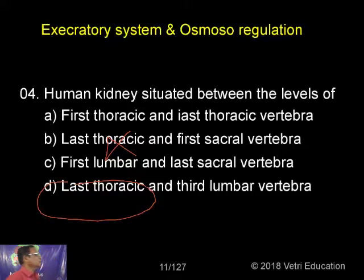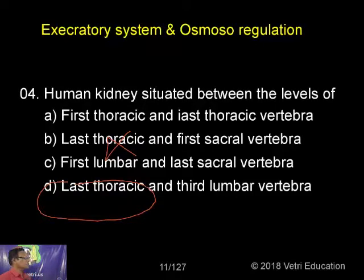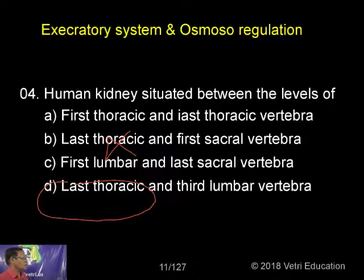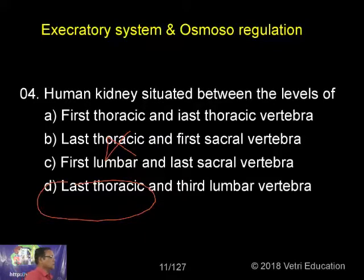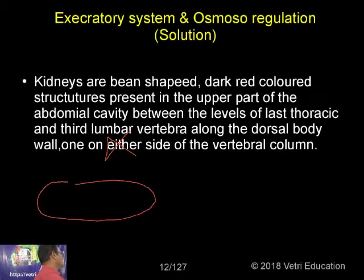The human kidney is normally situated between the levels of: first thoracic and last thoracic vertebra; last thoracic and first sacral vertebra; first lumbar and last sacral vertebra; or last thoracic and third lumbar vertebra.